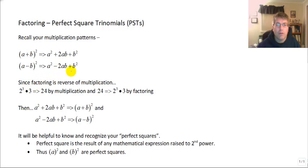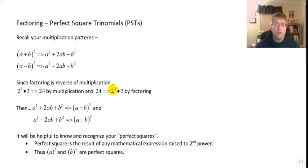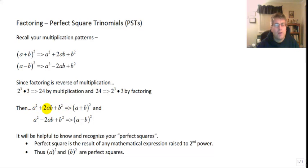Since factoring is the reverse of multiplication — just as 2 cubed times 3 is 24, and factoring 24 means splitting it into 8 times 3 — we can run our multiplication patterns in reverse. So a squared plus 2ab plus b squared factors to the quantity a plus b squared, and a squared minus 2ab plus b squared factors to the quantity a minus b squared.